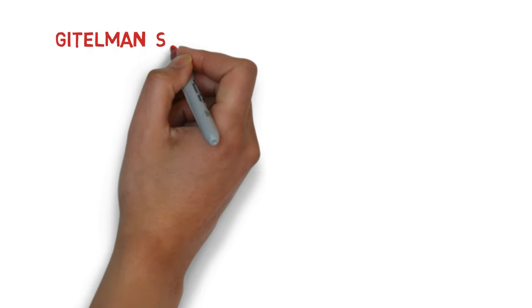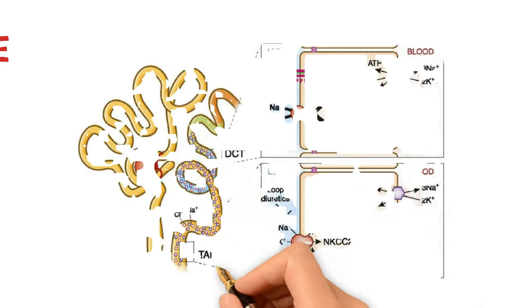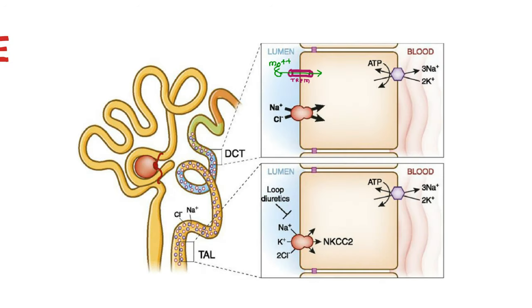Now, let's see Gitelman syndrome. It is also an autosomal recessive condition presenting in late childhood. It has defect in distal collecting tubule.